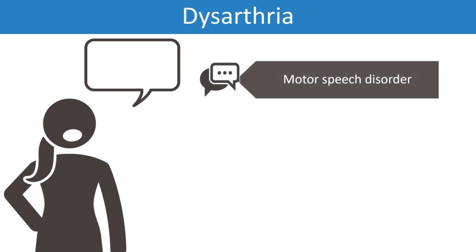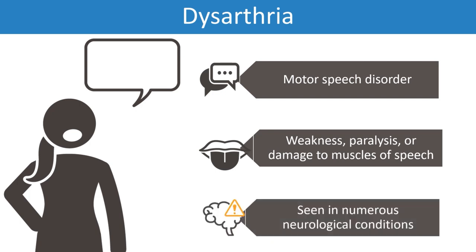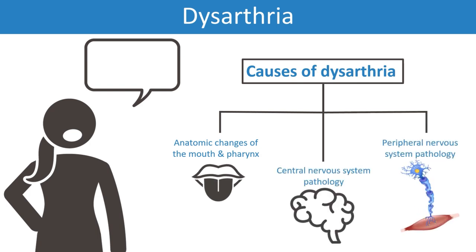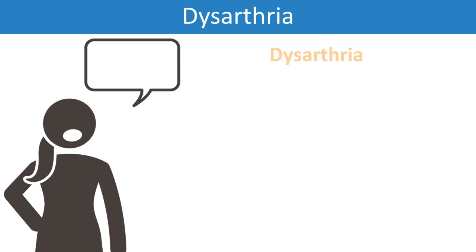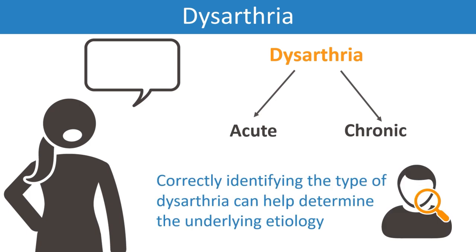Dysarthria is a motor speech disorder resulting from weakness, paralysis, or damage to the muscles that produce speech. It can be seen in numerous conditions including neurological disorders, with causes ranging from anatomic changes of the mouth and pharynx to central and peripheral nervous system pathology. Dysarthria can be characterized as acute or chronic and further classified into specific types. Correctly identifying the type of dysarthria can help determine the underlying etiology.